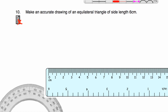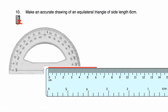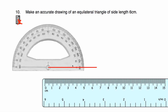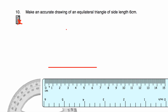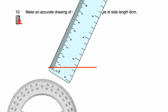We draw a 6 centimetre base. Now we get our protractor and place it on the left-hand side of the line with the cross on the endpoint and 0 on the line. Since equilateral triangle angles are all 60 degrees, we go around to 60 degrees — 10, 20, 30, 40, 50, 60 — and mark that point. We then line up the ruler from 0 through that point and draw a 6 centimetre line. We do the same on the right-hand side, then join the last two points. That gives us our equilateral triangle with three 6 centimetre sides and three 60 degree angles.